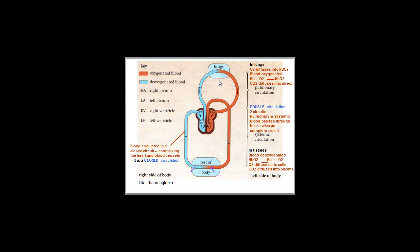When going through the pulmonary circuit and into the lungs, oxygen diffuses into red blood cells (RBCs) so the blood becomes oxygenated. That then gets pumped back to the left atrium, where it goes into the left ventricle and is then pumped out through the aorta to the rest of the body.